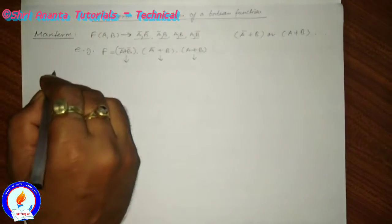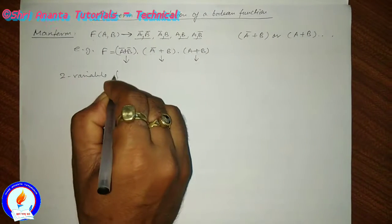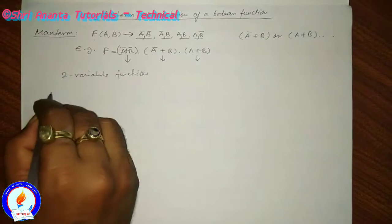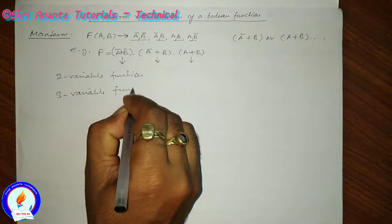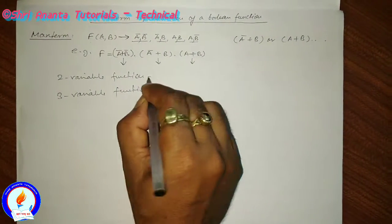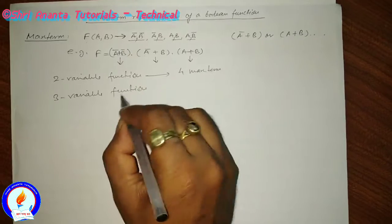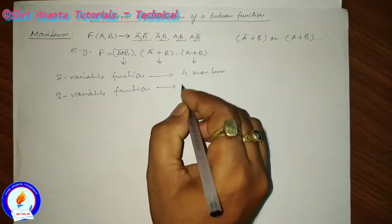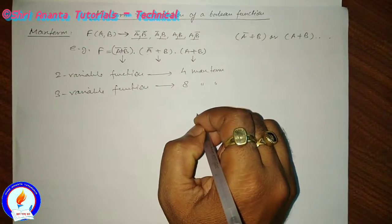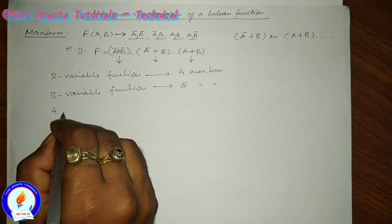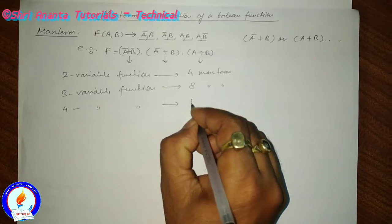This is the example for a two variable function. Similarly, if we have a three variable boolean function, then in case of two variables there will be four max terms. Similarly, for a three variable function there will be eight max terms. And if the boolean function is a function of four variables, then there will be 16 max terms.